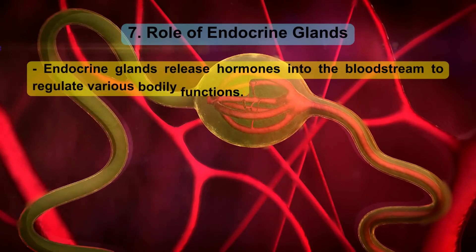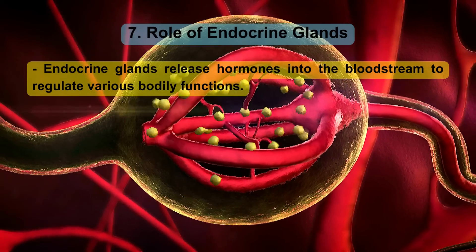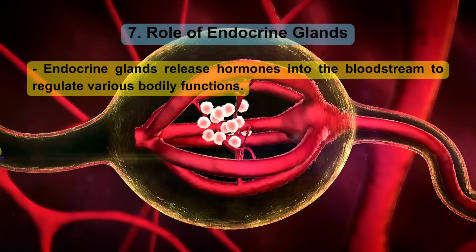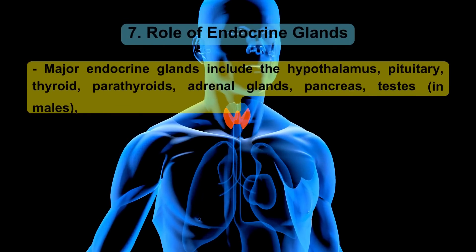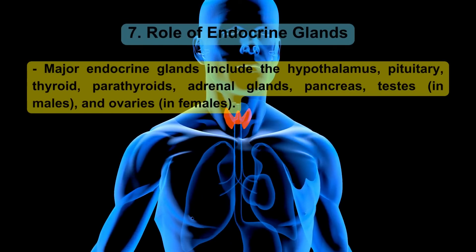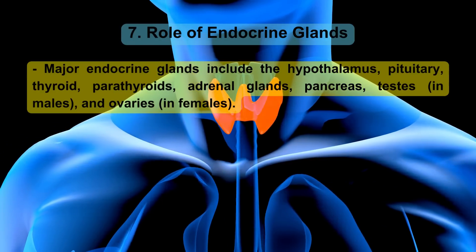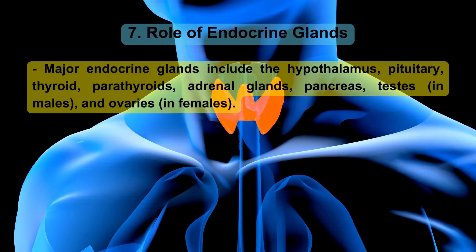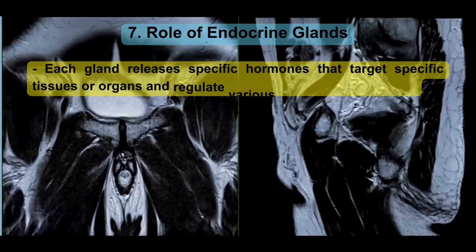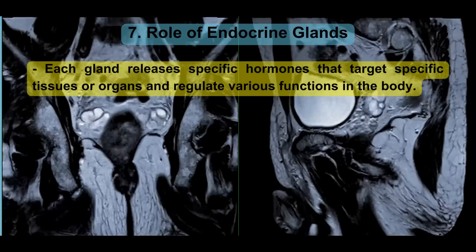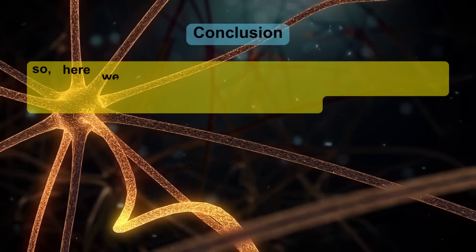Endocrine glands release hormones into the bloodstream to regulate various bodily functions. Major endocrine glands include the hypothalamus, pituitary, thyroid, parathyroids, adrenal glands, pancreas, testes (in males), and ovaries (in females). Each gland releases specific hormones that target specific tissues or organs and regulate various functions in the body.